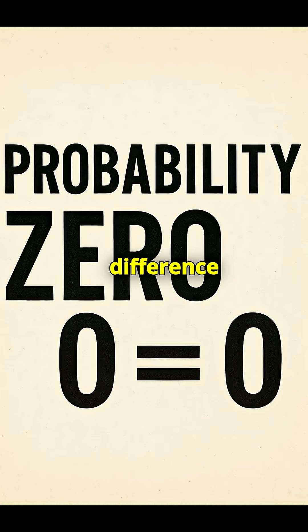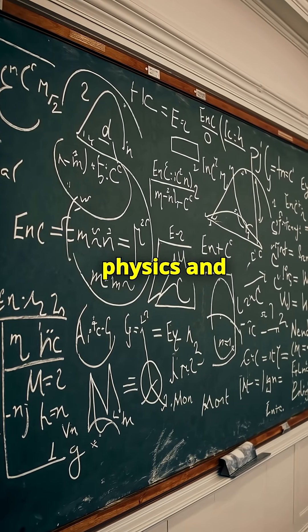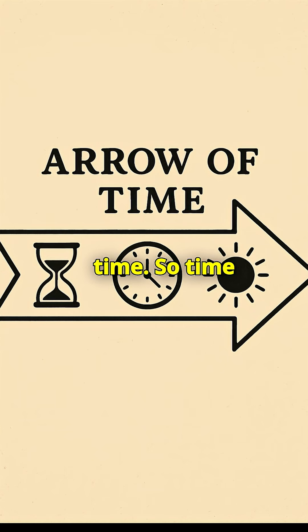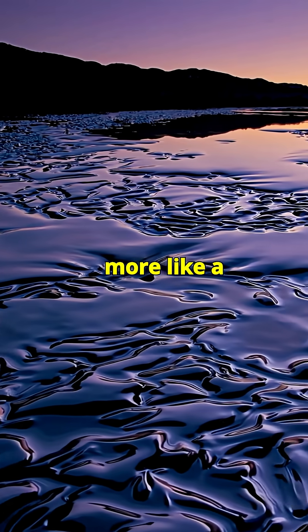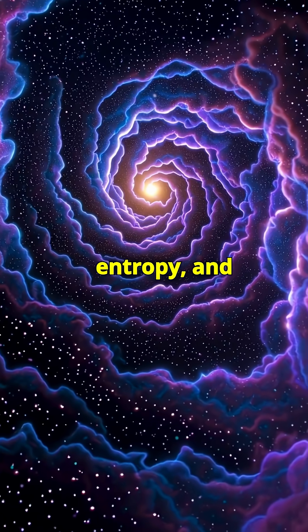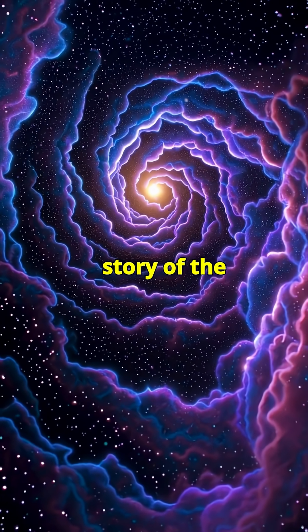And that difference between what's allowed by physics and what's likely, that's what gives rise to the arrow of time. So time doesn't really flow like a river. It's more like a direction carved out by probability, guided by entropy, and written into the unfolding story of the universe.